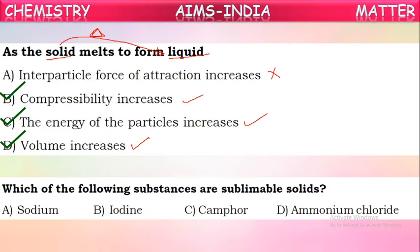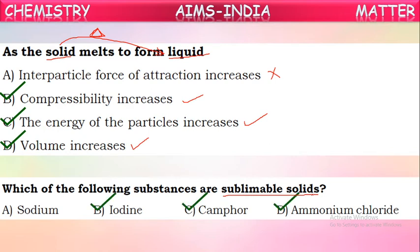Question 4: Which of the following substances are sublimable solids? Sublimation is the conversion of solids directly into gaseous form without passing through the liquid state. Substances that undergo this are called sublimable solids. Examples include iodine, camphor, ammonium chloride, and naphthalene. When heated, these directly convert from solid state to gaseous state without becoming liquid.